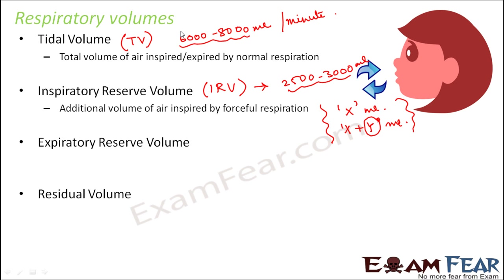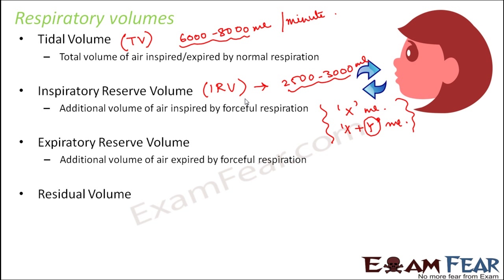Similarly, expiratory reserve volume is the additional volume of air expired by forceful respiration. If you try to forcefully do an expiration — throw out as much air as possible — the additional volume of air which is expired is expiratory reserve volume, abbreviated as ERV. It has been seen to be 1000 to 1100 milliliters for an adult human being.